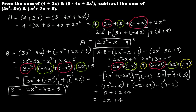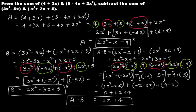To summarize: B is the sum of the third and fourth expressions, and A is the sum of the first two. Subtracting B from A gives the result 2x plus 4.